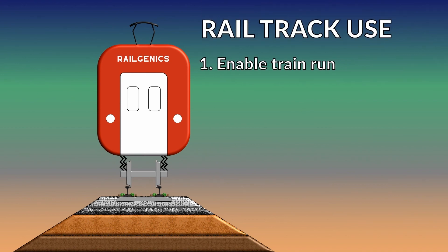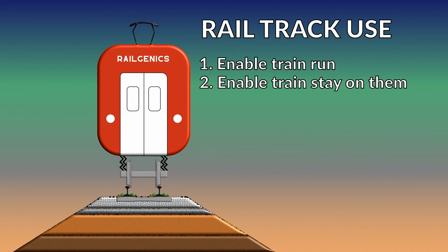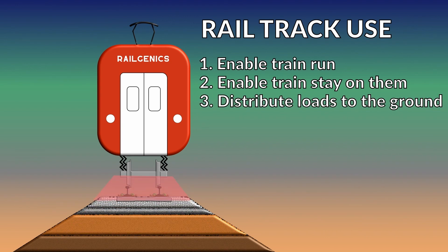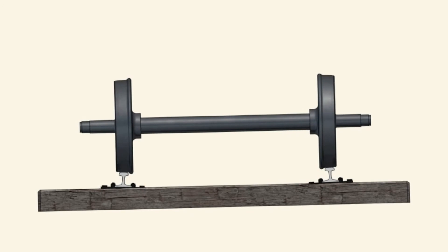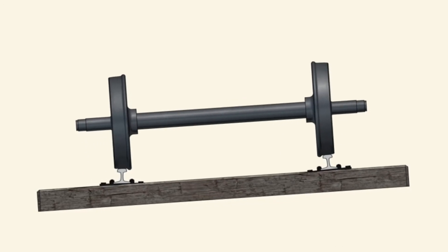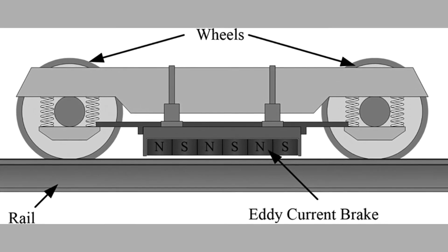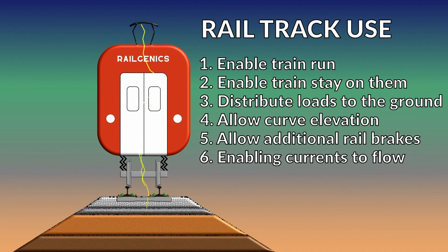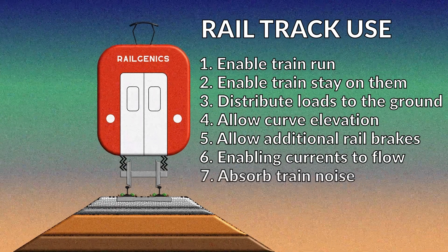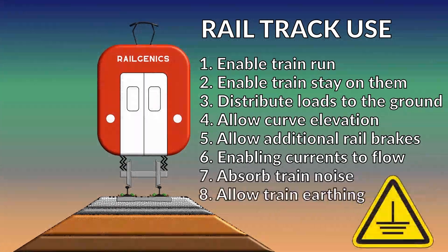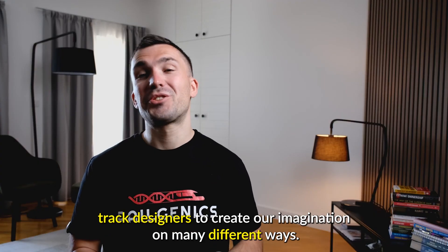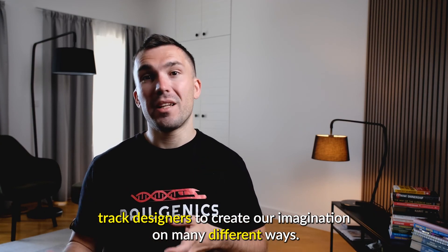First, they enable trains to run on them. Second, they ensure that trains will stay on them by having a standardized distance between rails, also called track gauge. Third, they distribute loads from the train to the ground through the wheel-rail connection. Fourth, they allow trains to run at higher speeds in curves by elevating the outer rail. Fifth, they allow trains to brake using electromagnetic brake-rail contact. Sixth, they help track circuits identify train absence by enabling currents to flow. Seventh, they absorb noise from passing trains. Eighth, they allow train grounding or earthing, and last, they allow track designers to create their imagination in many different ways.